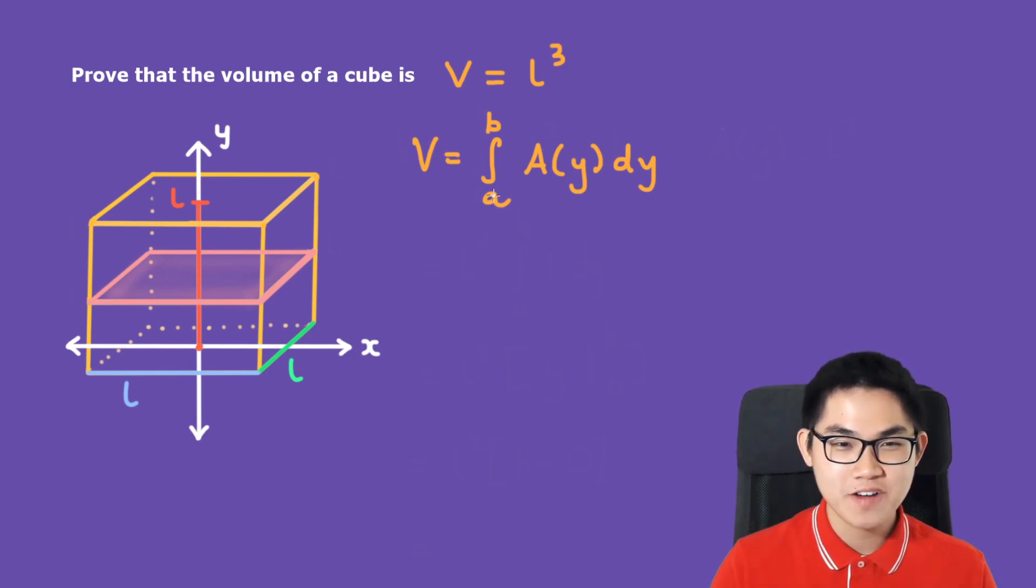Okay, so the first step is to find A and B. So A is our starting point. We start at the bottom cross section and we add all of the cross sections until we reach the very top. And so the top is L and therefore B is going to be L and A is going to be 0.